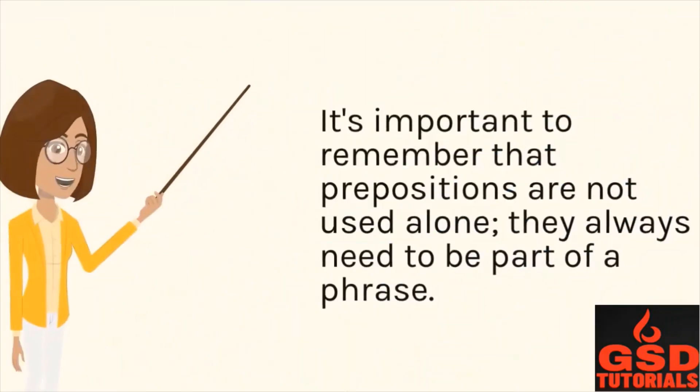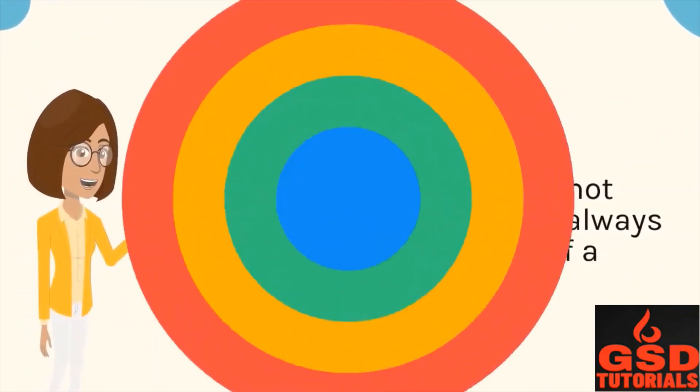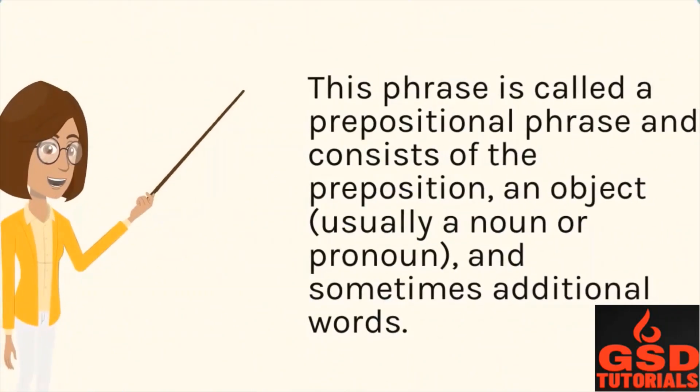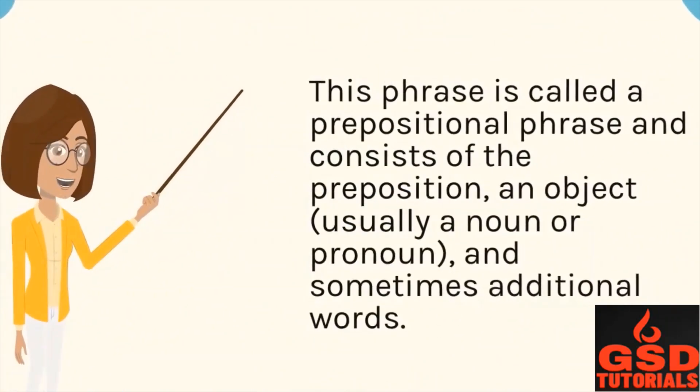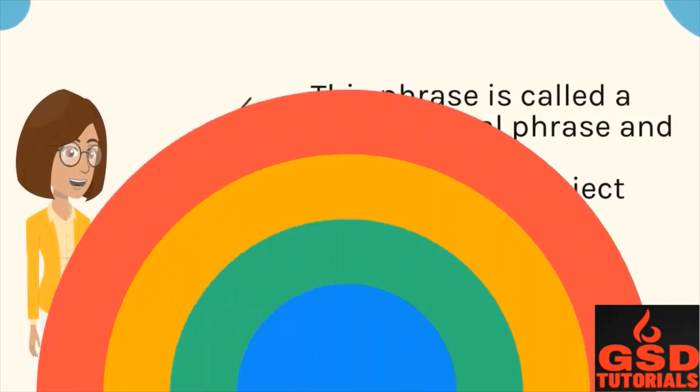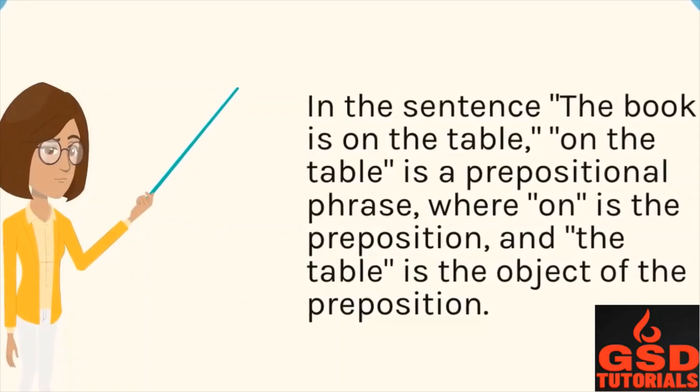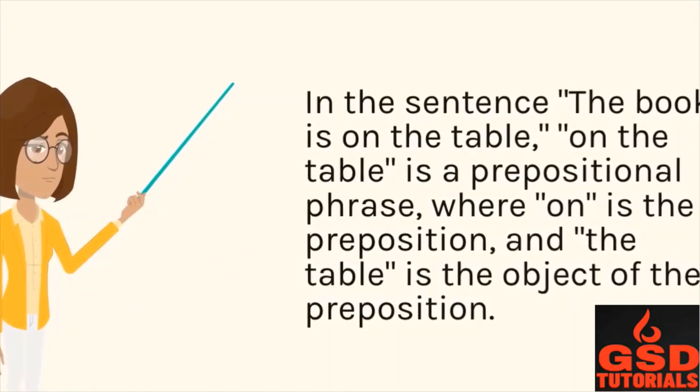It's important to remember that prepositions are not used alone; they always need to be part of a phrase. This phrase is called the prepositional phrase and consists of the preposition, an object (usually a noun or pronoun), and sometimes additional words. In this sentence, the book is on the table, on the table is a prepositional phrase, where on is the preposition, and the table is the object of the preposition.